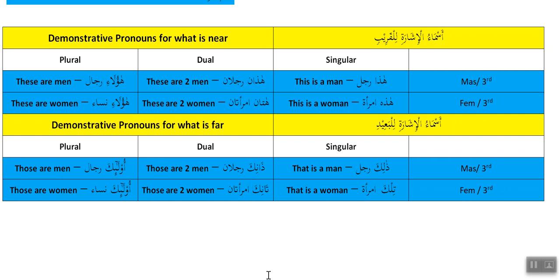Most Arabic speakers don't pay attention to that, but I want to teach it correctly — how you apply it is between you and Allah. Those are two women — 'tanika imra'atani.' If they are near we say 'hatani,' if they are in a distance we say 'tanika.' And if the women are far off instead of 'haulai' we say 'ula'ika nisa'un' — the waw is silent — those are women.